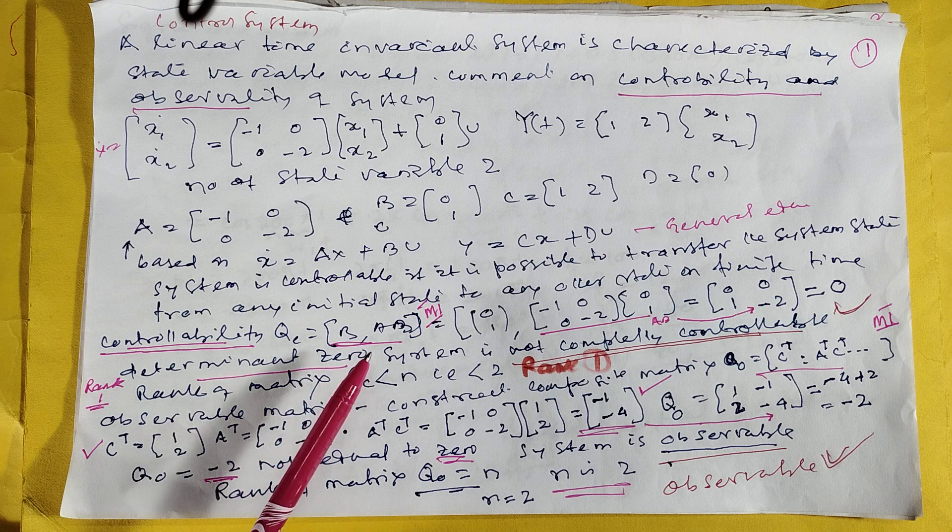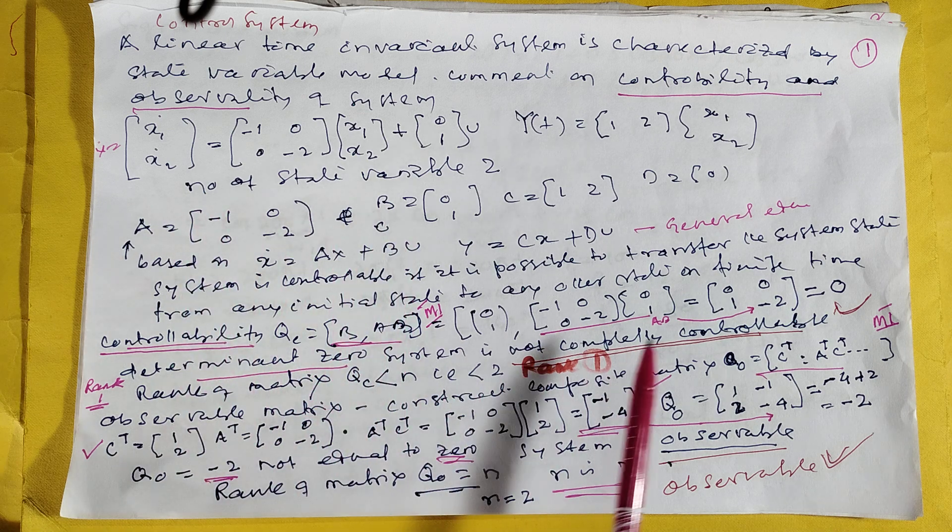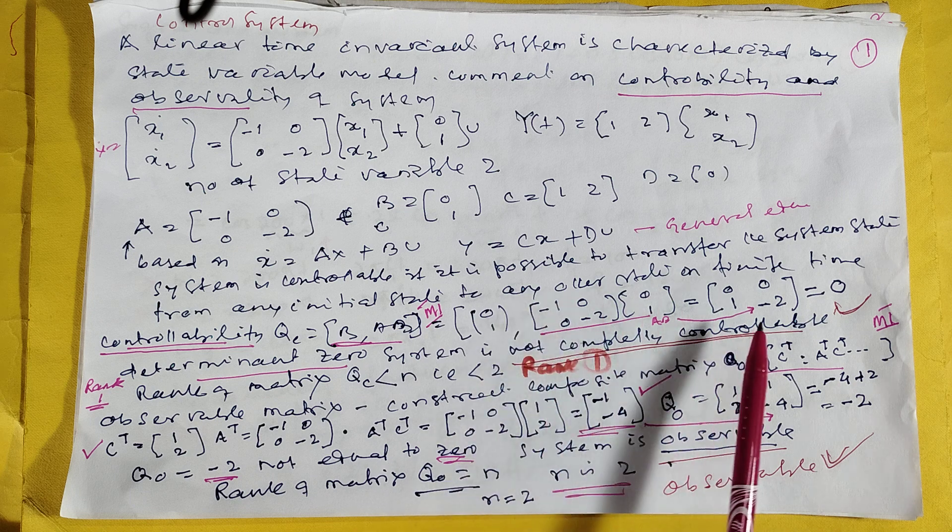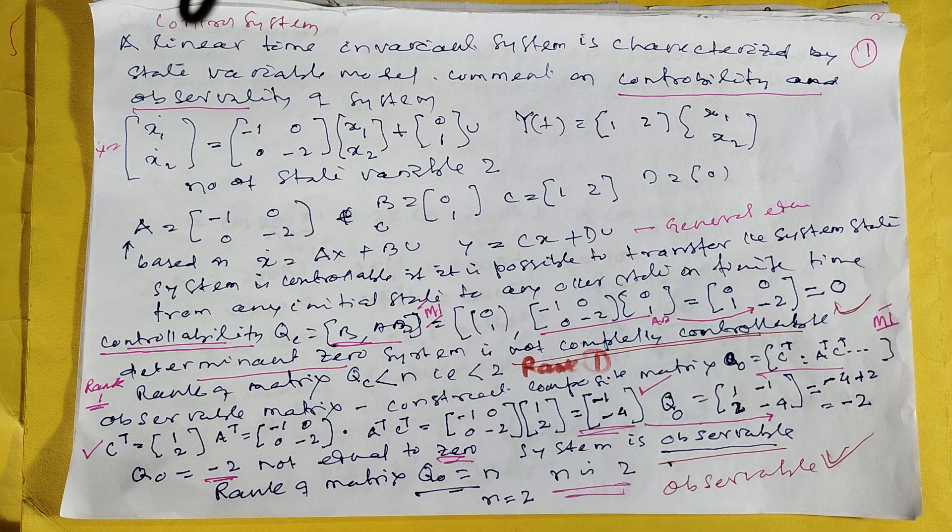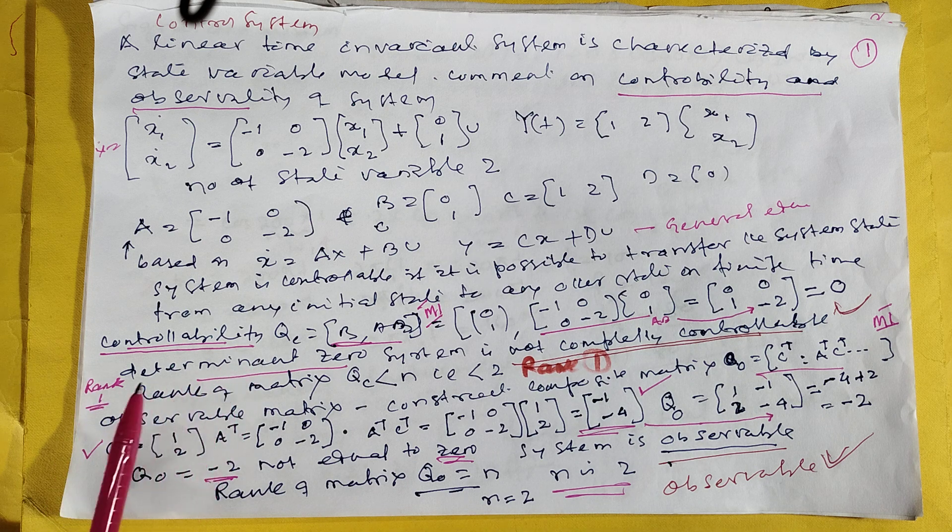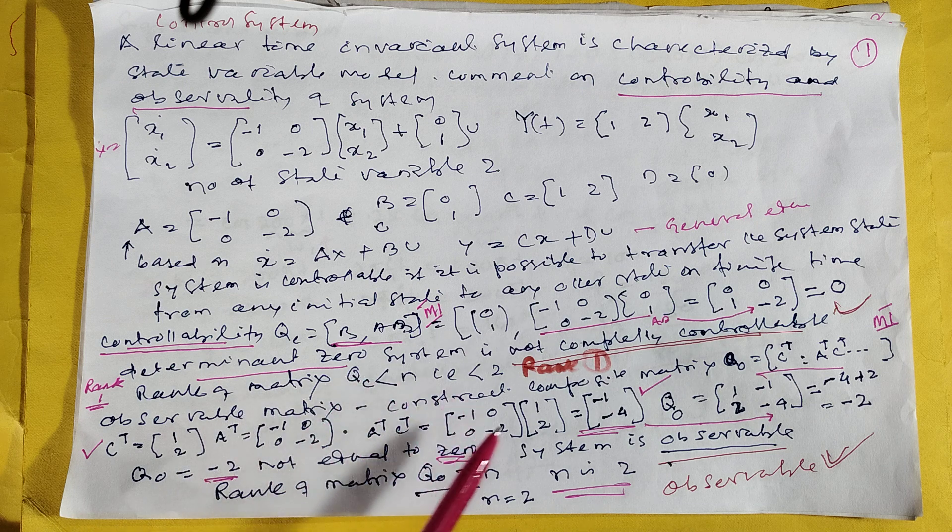From here you can find B and A. Then automatically AB is coming: 0, minus 2. B is coming 0, 1, so it is 0, 0, means it is not controllable. And the matrix rank, rank is 1, because Qc is 1x2, Qc rank is 1.